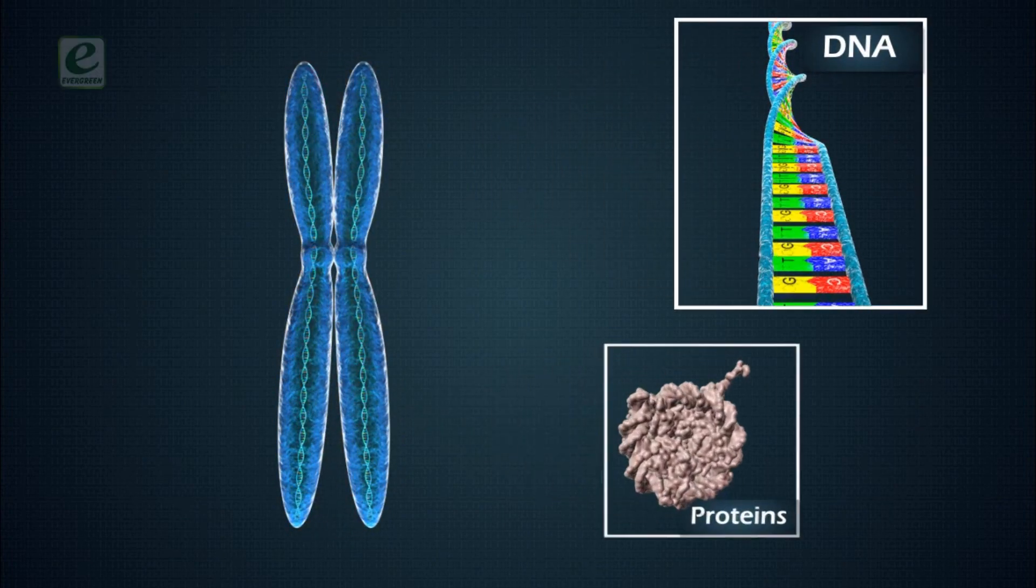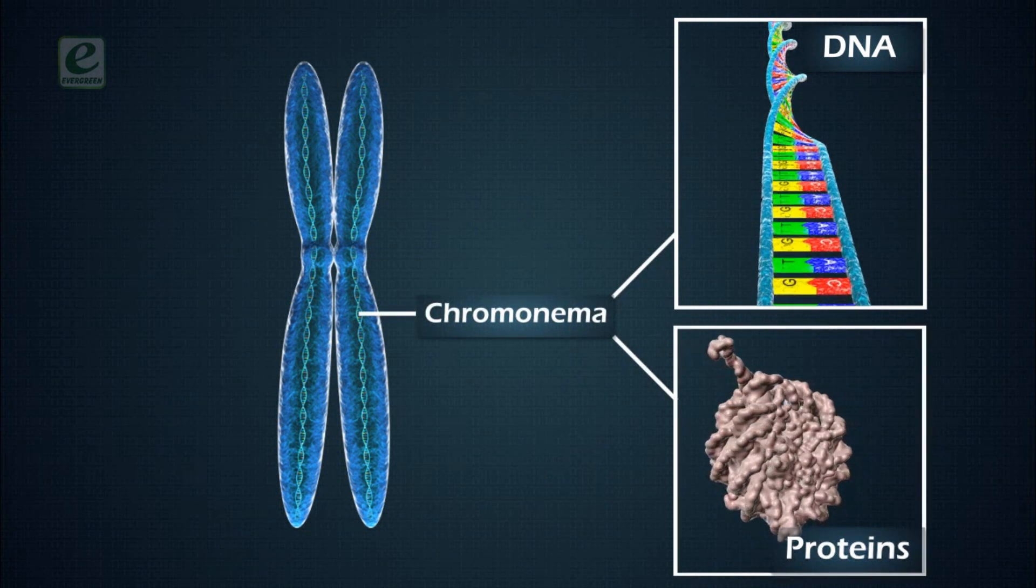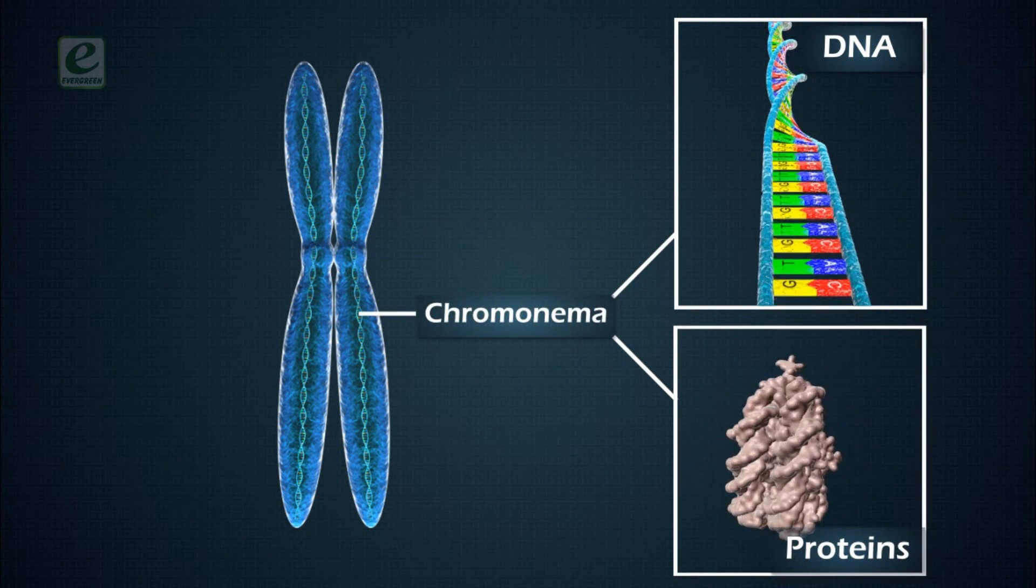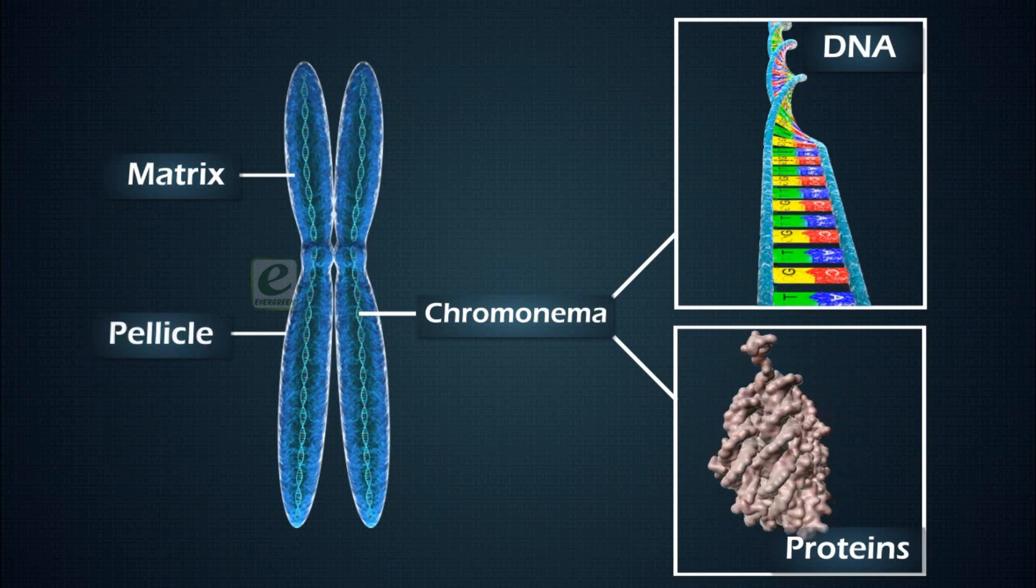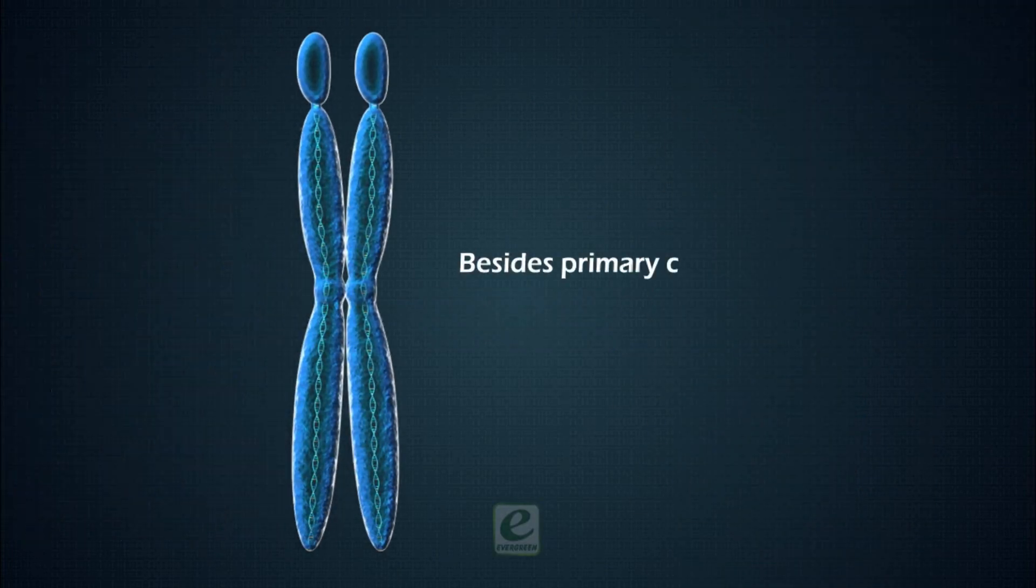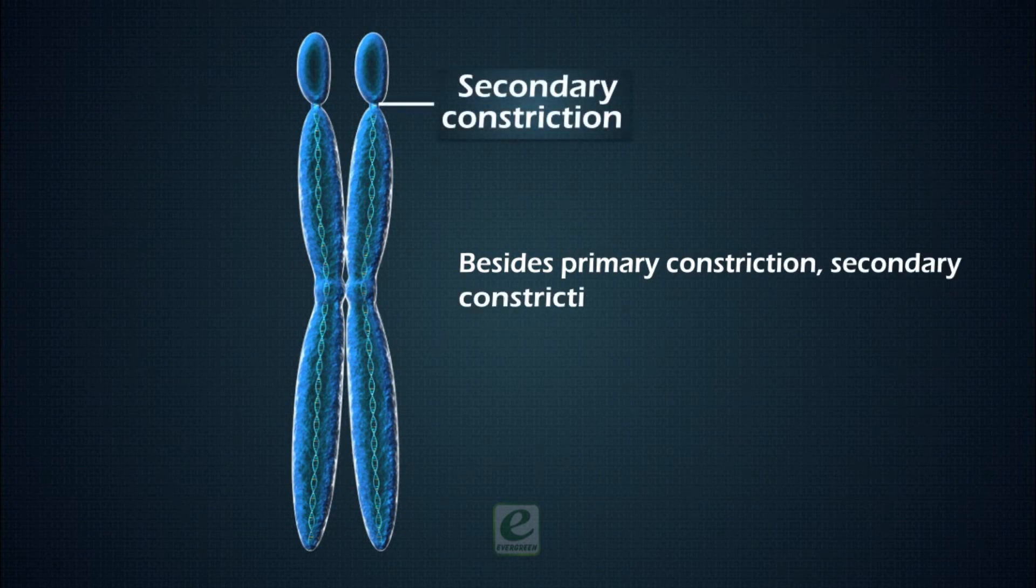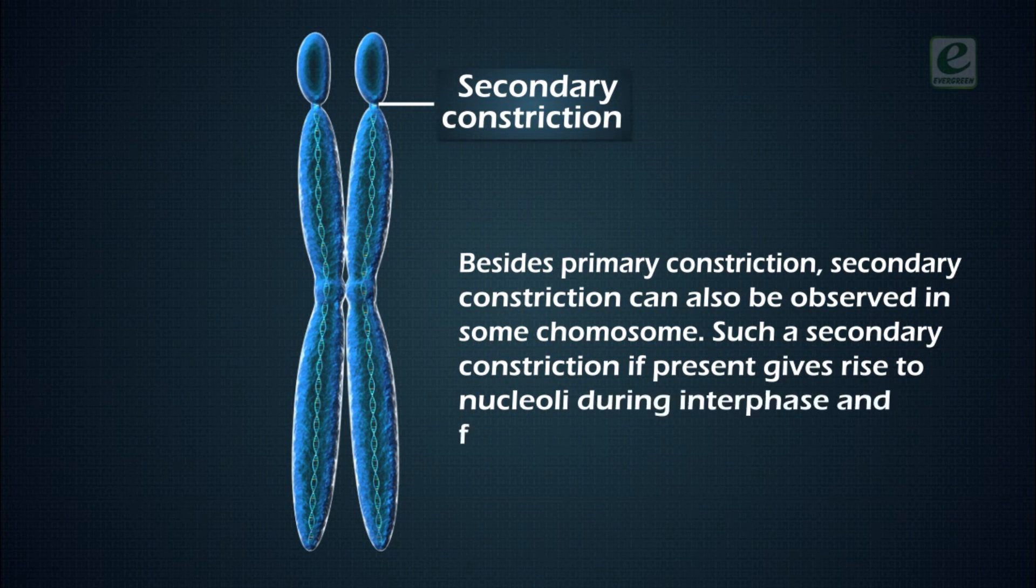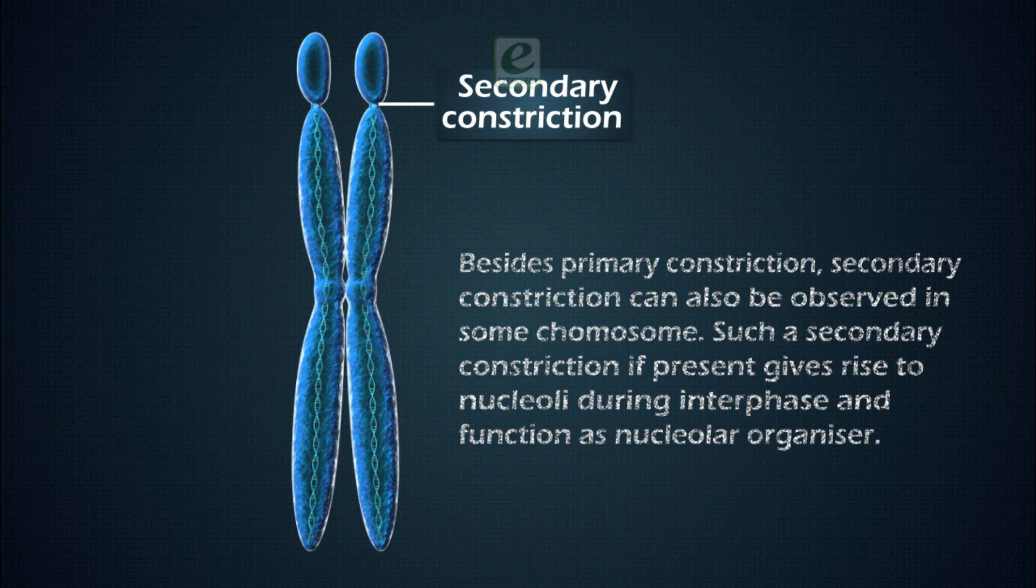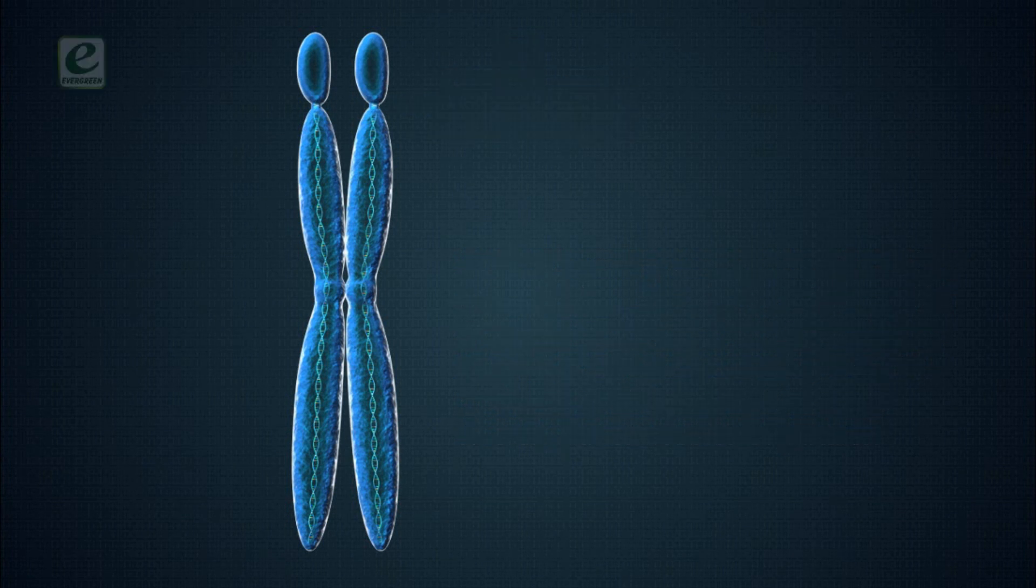The chromonema is surrounded by matrix which is covered by a covering called pellicle. Besides primary constriction, secondary constriction can also be observed in some chromosomes. Such a secondary constriction, if present, gives rise to nuclei during interphase and functions as nucleolar organizer.